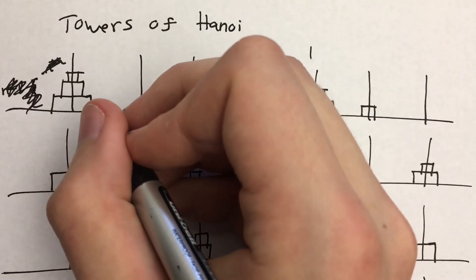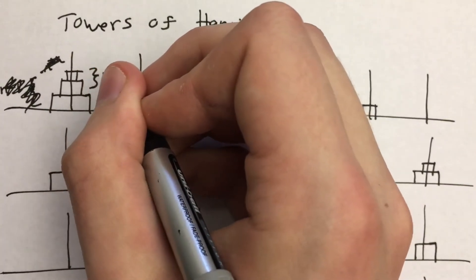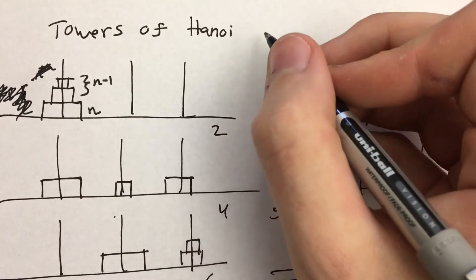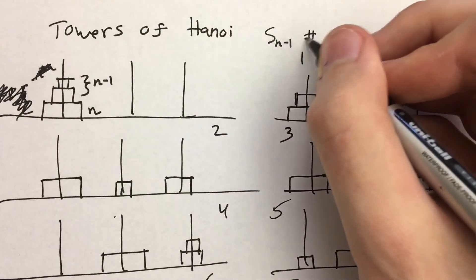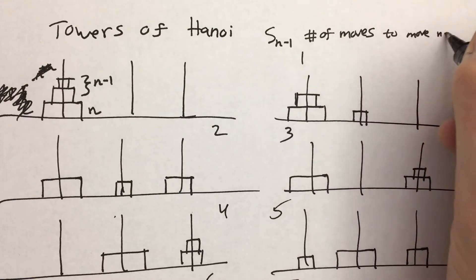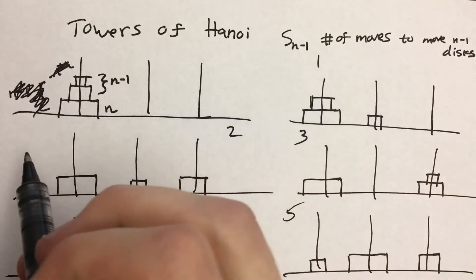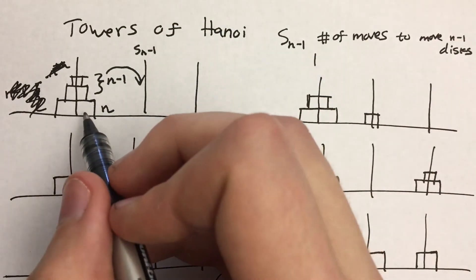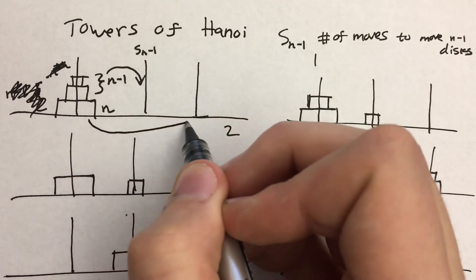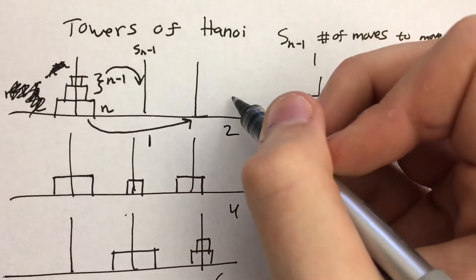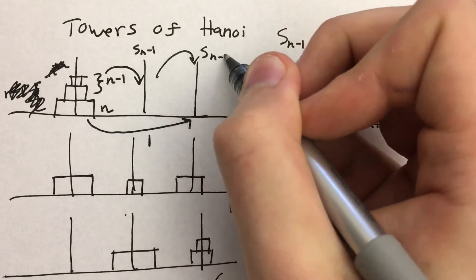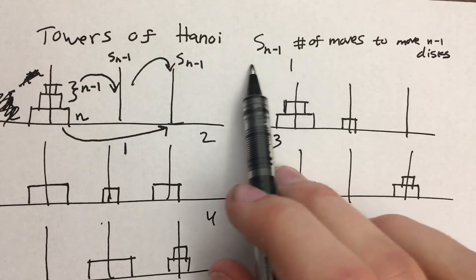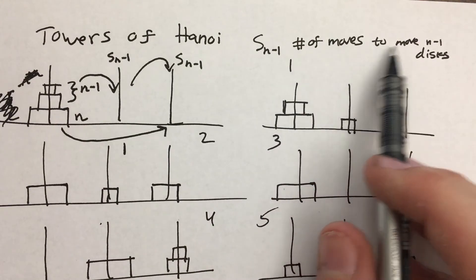Let's think of the bottom disc as the Nth disc, with N minus one discs on top of it. If we already know the term that comes before — S sub N minus one is the number of moves to move N minus one discs — then to move the N minus one discs over to another peg, that's going to be S sub N minus one moves. S sub N minus one is the number of moves to move N minus one discs to another post.